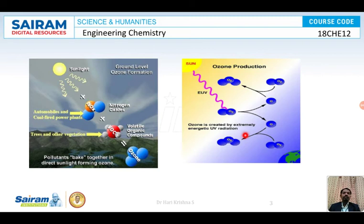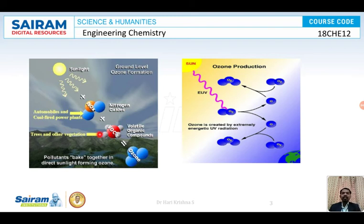This ozone is created in the presence of UV light, and it in turn prevents UV light from entering the atmosphere. These reactions are continuous in the stratosphere. The ozone produced above the earth's surface, that is in the biosphere, is very dangerous.